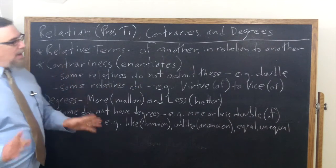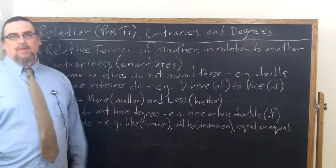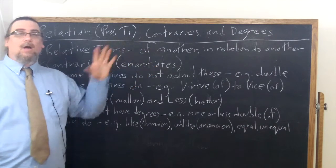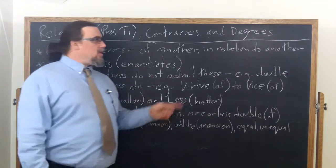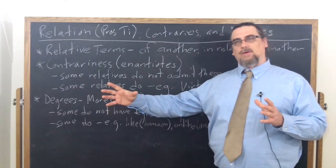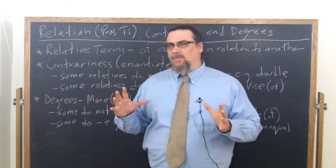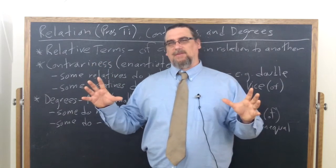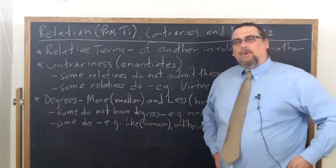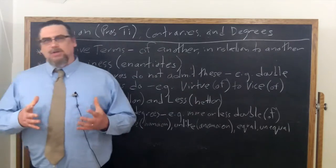So what we want to point out is that not every relative term or really pair of relative terms, core relatives, admits of contrariness. They're not all opposites to each other. So for example, he likes to use this one quite a lot: double. One thing is double of another. That doesn't mean that it's the thing's opposite. And you could say, well, what about half? Well, that's a core relative, but it's not an opposite in the way that Aristotle is talking about here.